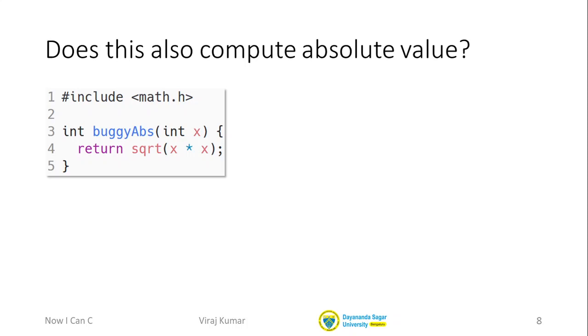So I'm appealing to, I'm calling the built-in sqrt function to compute the square root and I'm just giving it the argument x times x which is x square.